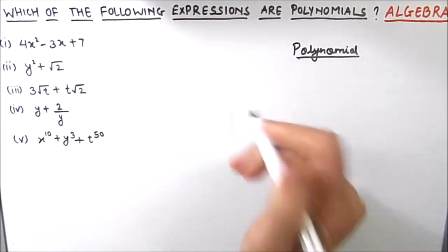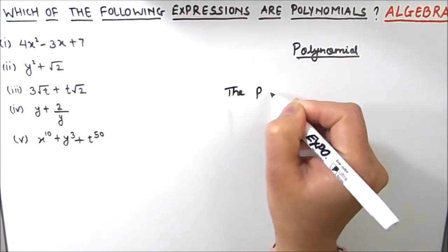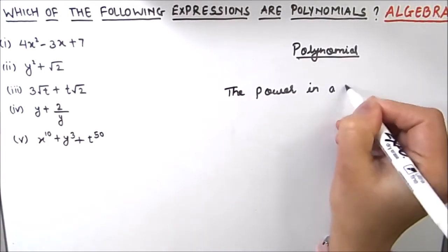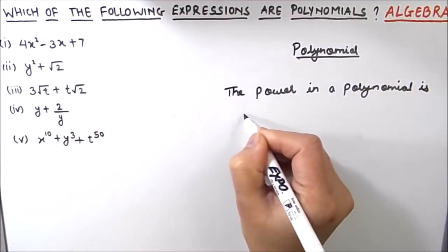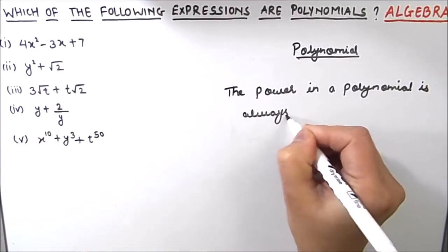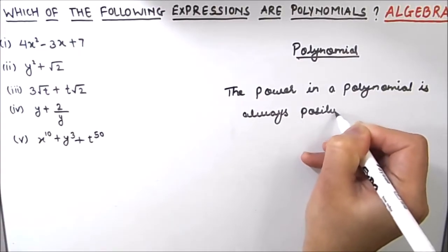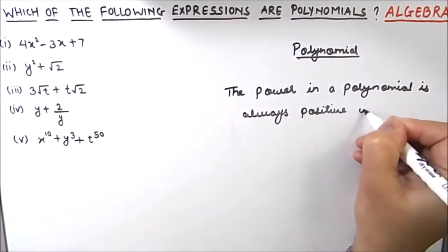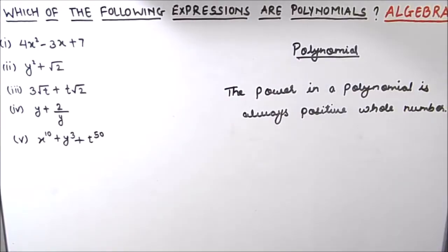An important thing about polynomials is that the powers in the polynomial should be whole numbers. The power in a polynomial is always positive and a whole number. These are the things we should know about polynomials to answer the question.